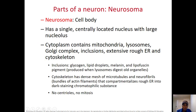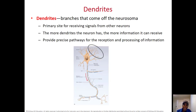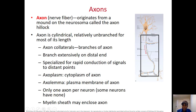Inside the neurosoma you have cytoplasm, mitochondria, lysosome, and Golgi apparatus. The dendrites are the extensions of the neurosoma that receive information. The axon is the part of the neuron where information from the cell body is transmitted and transported to the end of the axon. The axons of a neuron together will make the nerve fiber. You see the axoplasm, which is the cytoplasm of the axon, and the axolemma as the plasma membrane.